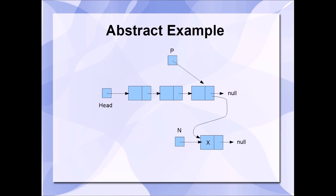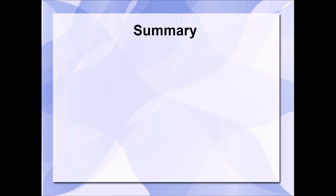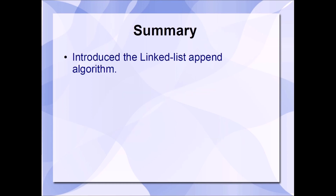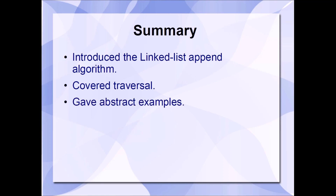At this point, P contains the memory address of the last node of the list. So now we will set P->next to N. This concludes the append algorithm. Our new node has been created, the data has been stored in the new node, and the pointers have all been updated so that our new node is now at the end of the list. In summary, in this video we introduced the linked list append algorithm, briefly discussed traversal and how it's used to identify the last node of the linked list, and provided abstract examples to support these explanations.